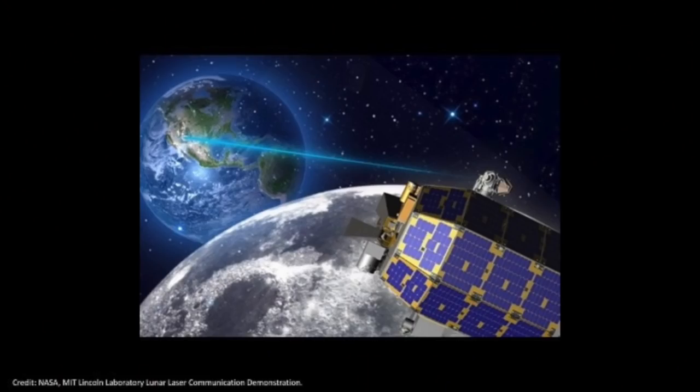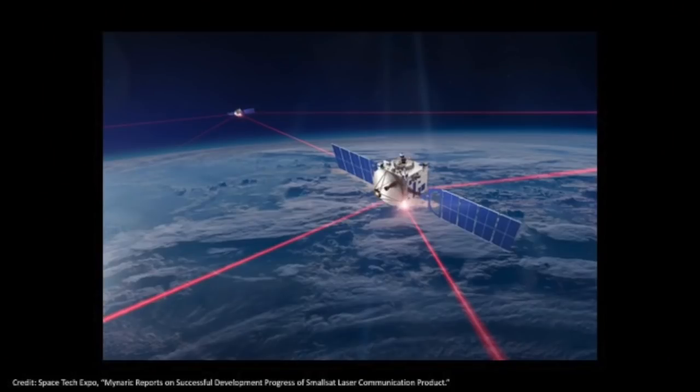Laser communication has actually already been demonstrated in space. Between 2013 and 2014, NASA and MIT Lincoln Laboratory demonstrated laser communication from the LADEE spacecraft orbiting the Moon all the way to Earth at a data rate of around 600 megabits per second — that's 42 HD movies from the Moon to Earth in around five minutes. And in 2008, the German Aerospace Center and TSAT demonstrated laser communication from a low-Earth orbit satellite to Earth at 6 gigabits per second — around 420 HD movies from space to Earth in around five minutes.